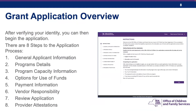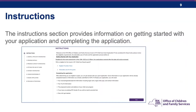After verifying your identity, you will be brought to the application instructions page. There are eight steps to the application process: general applicant information, program details, program capacity information, options for use of funds, payment information, vendor responsibility, review application, and provider attestations. The eight steps are listed along the left navigation menu. As you progress through the application, steps will turn purple as they are completed. You cannot skip ahead and must complete the steps in order. After reviewing the instructions, click Next to get started.